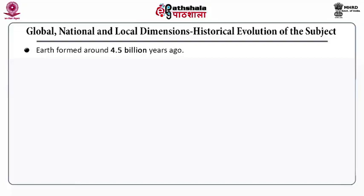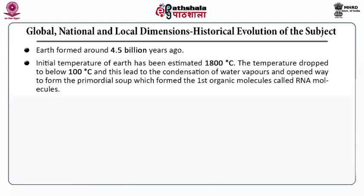Historical evolution of biodiversity. Earth was formed around 4.5 billion years ago. Initially, the temperature of the earth was around 1800 degrees Celsius. Later, the temperature dropped to below 100 degrees Celsius. This decrease in temperature led to the condensation of water vapours and opened the way to form the primordial soup. That primordial soup was the first organic molecules containing RNA molecule.